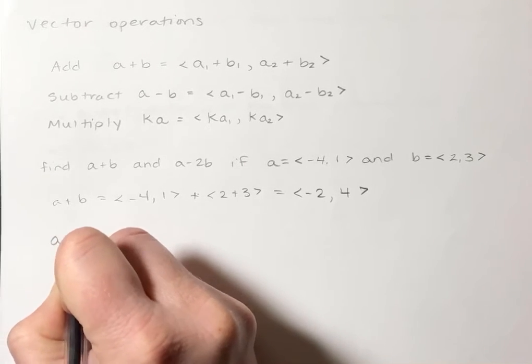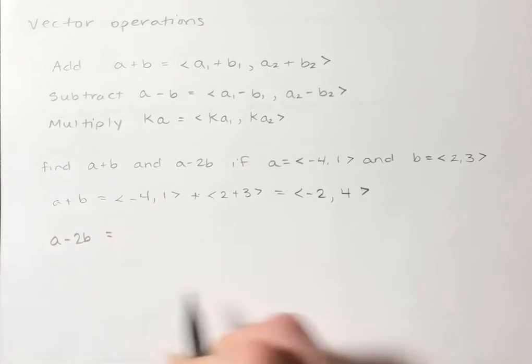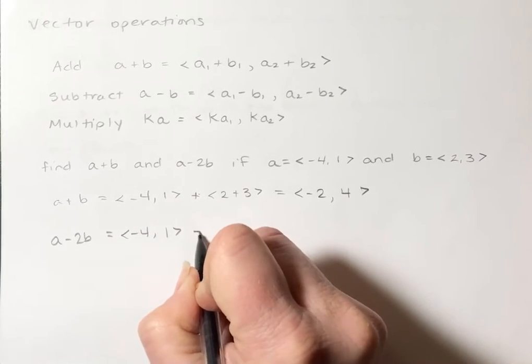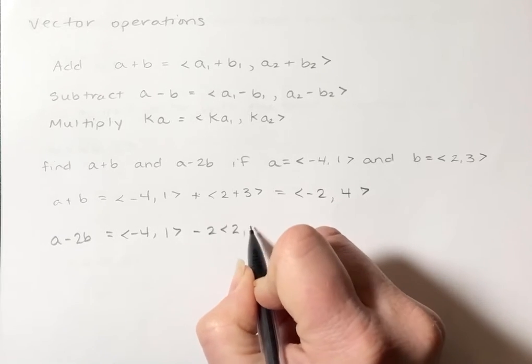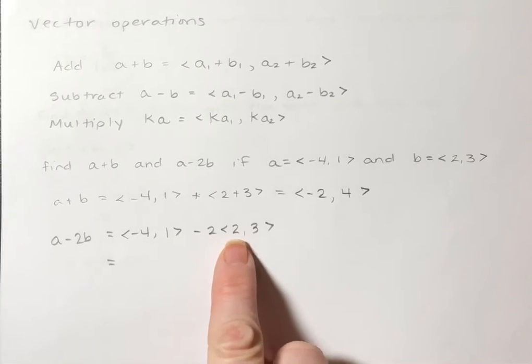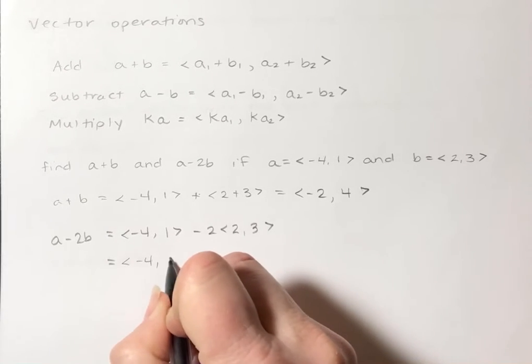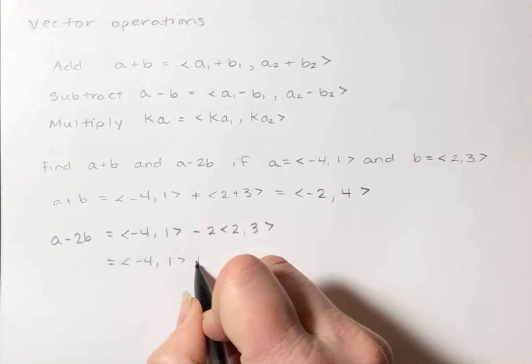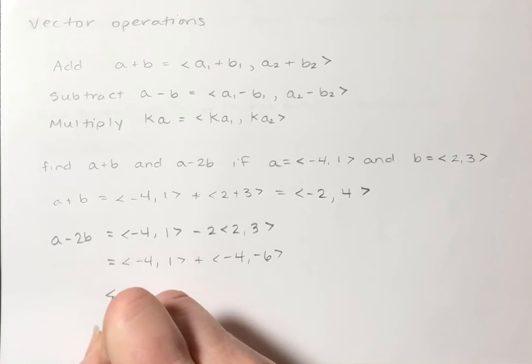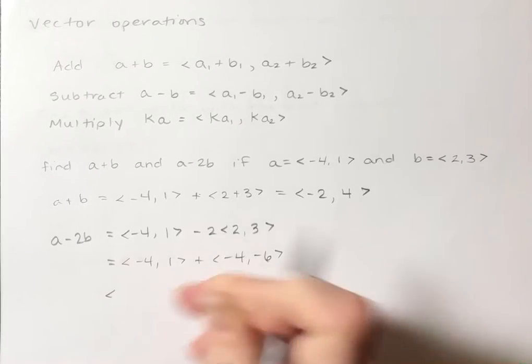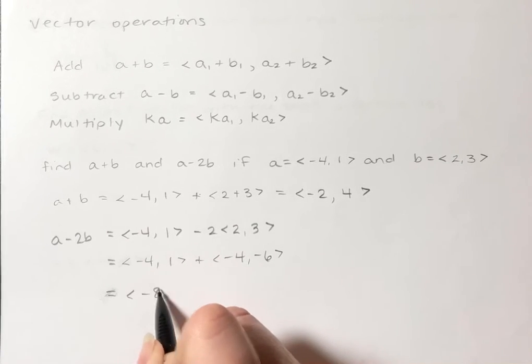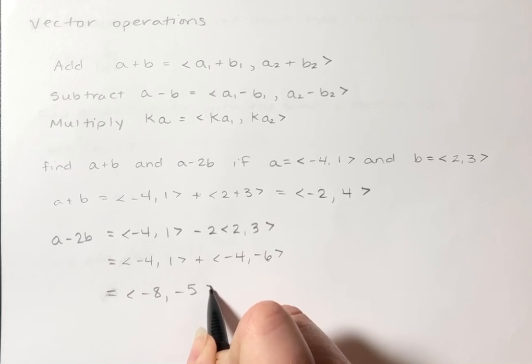And then if I'm gonna do A minus 2B I'm gonna take vector A and then minus 2 times vector B. So I can basically take the negative 2 times both of those and then add my X's so I have a negative 8 here, and add my Y's so I have a negative 5 here.